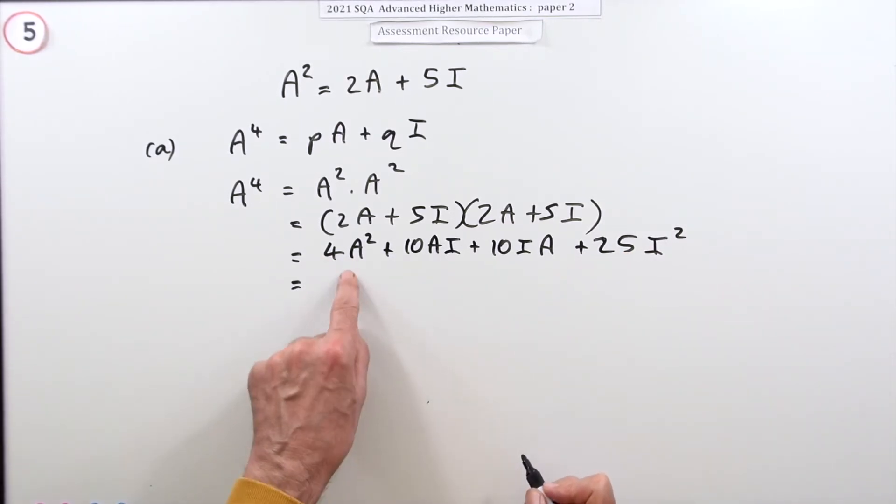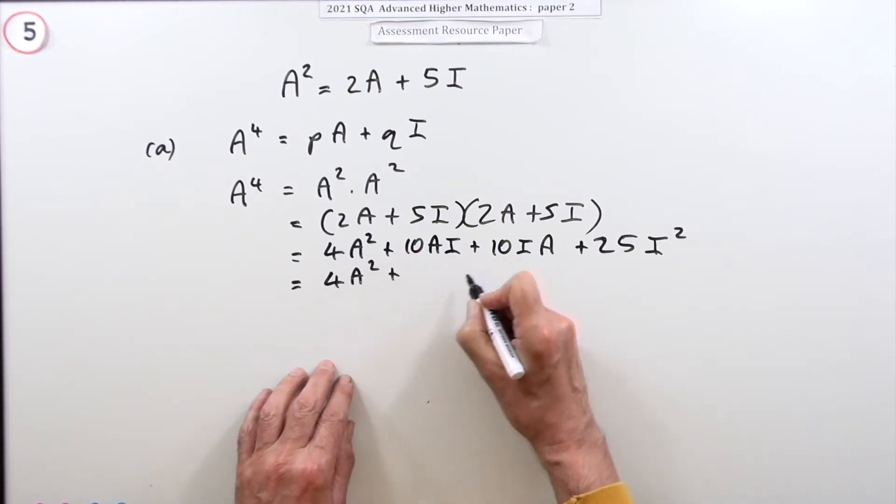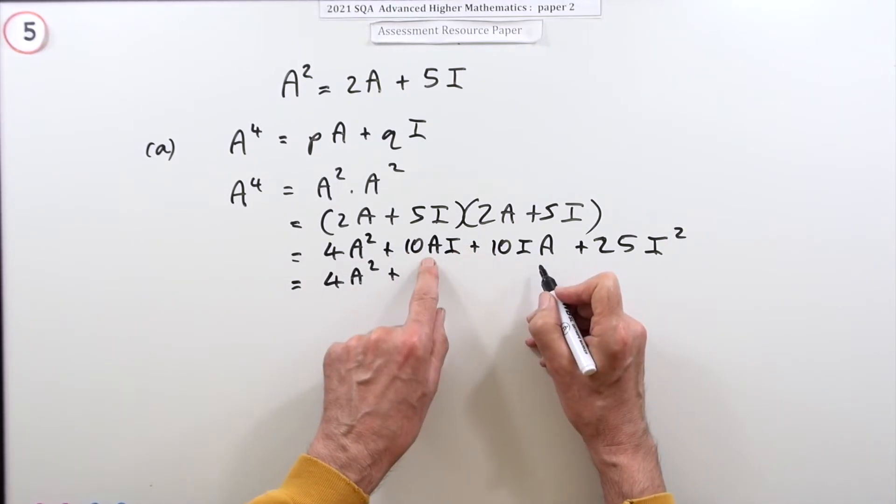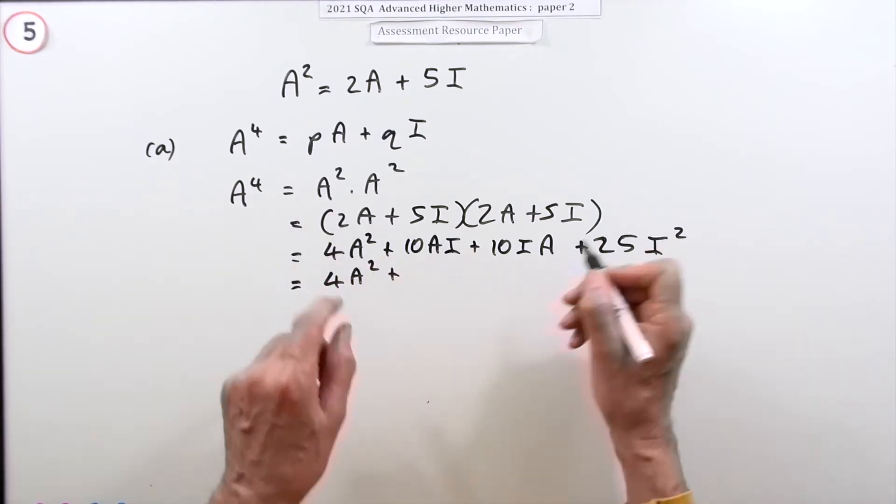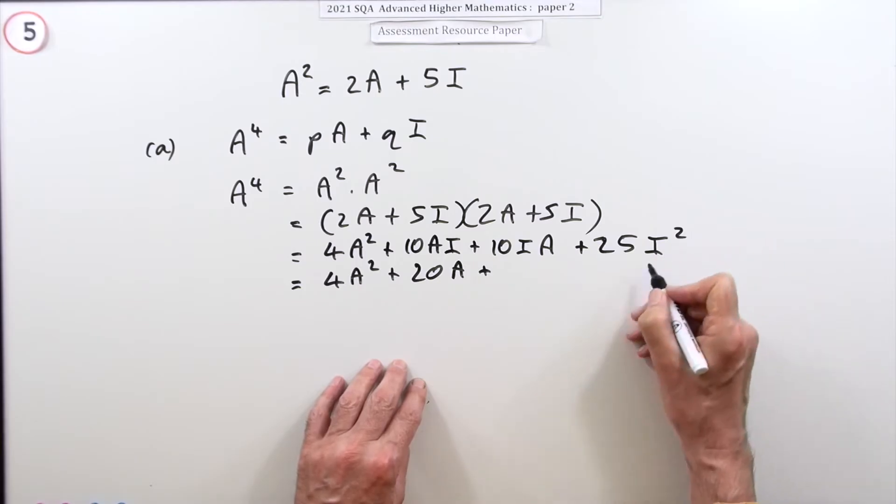So tidying that up, you've got four lots of A² and I times A or A times I is the same thing as A, plus 20A.